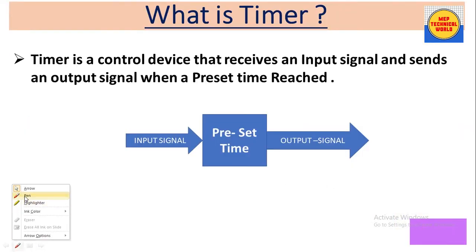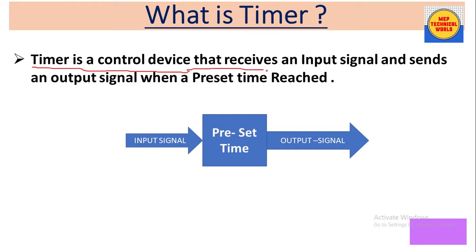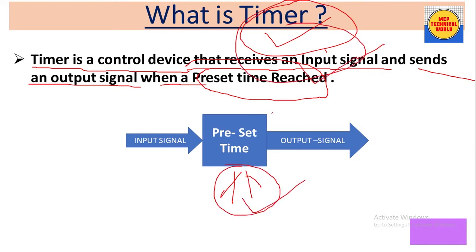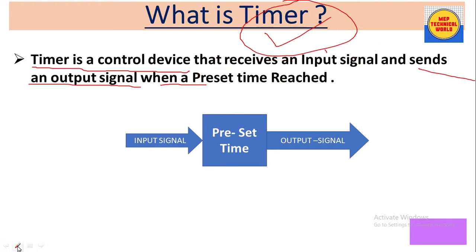So basically, what is a timer? A timer is a control device — or we can also say a switching device — that receives an input signal and sends an output signal when a preset time is reached. This timer switch operates according to the preset time.